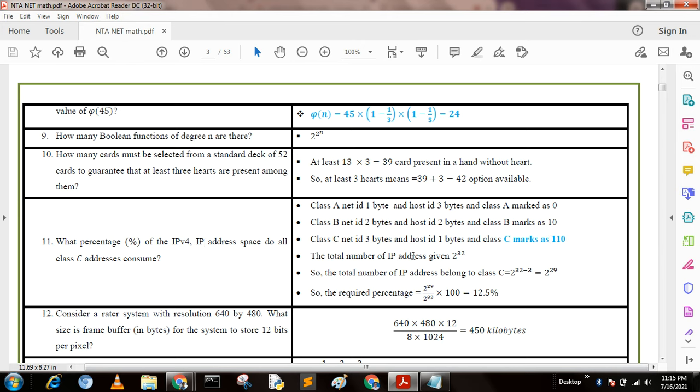Total number of IP addresses is 2^32. Class C contains 110 in first three bits, so we subtract these 3 bits: 32 - 3 = 29. We get the answer 2^29. The required percentage is 2^29 / 2^32.